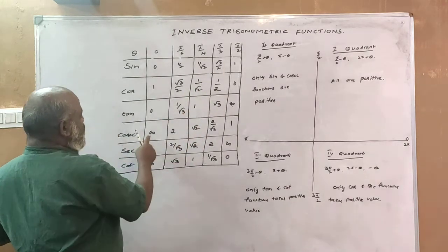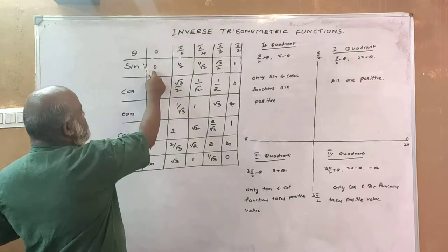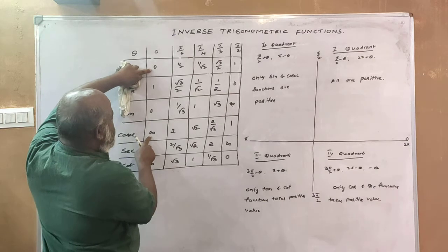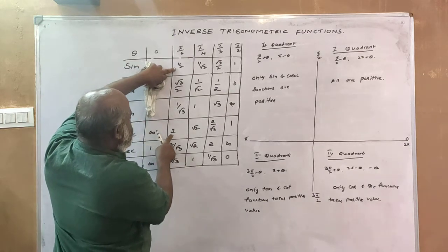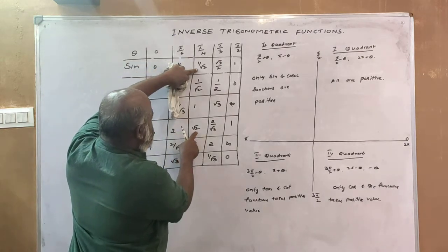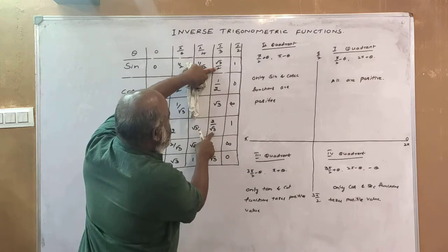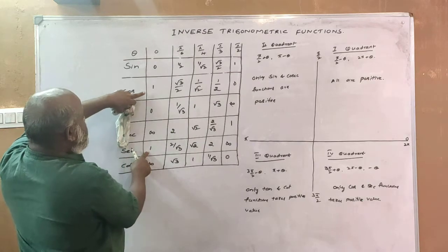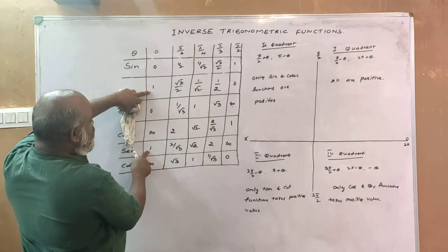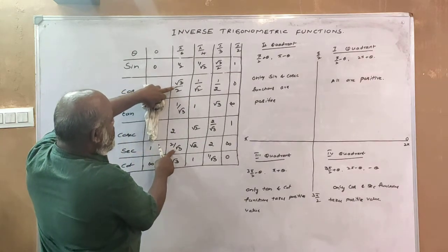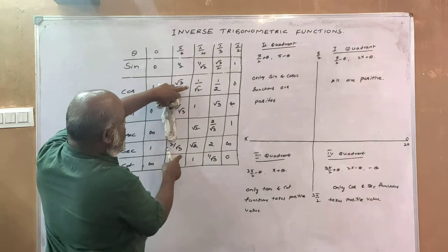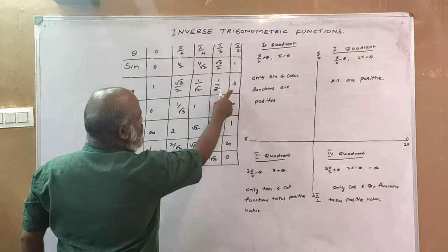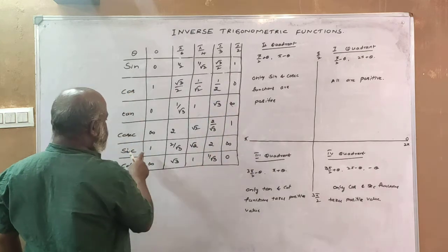This gives you the values of the trigonometric functions for standard angles. There is 1 by 0, which is infinity. You get 1/2, root 2 by 2, root 3 by 2, and then 2 by root 3. 1 by root 2 is root 2. 1 by 2 is root 2. 0 is the one by zero, which is infinity.